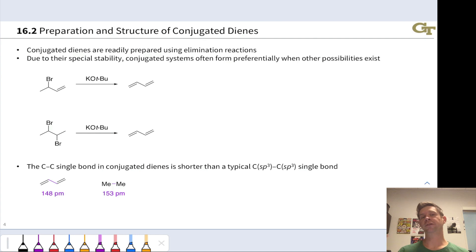And because they're particularly stable, and we'll dig into this and the reasons why and how we know this a little bit later, but due to that special stability, conjugated systems can often form preferentially when other possibilities exist. And we'll see an example of this on this slide.